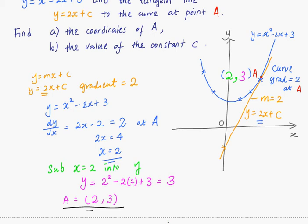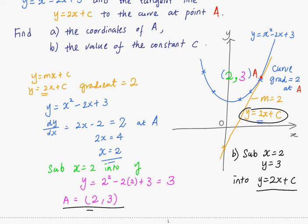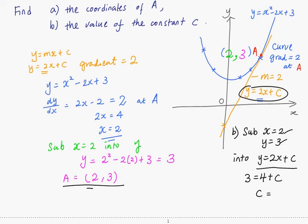Part B is very easy because point A also lies on the line y equals 2x plus c. Hence, for part B, we can substitute x equals 2, y equals 3 into y equals 2x plus c. Because the line y equals 2x plus c passes through point A, passes through x equals 2 and y equals 3. So by substituting, we obtain c is equal to negative 1.